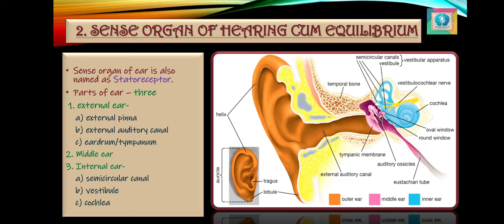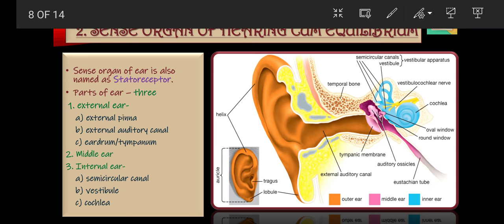The ear contains three main parts: first is the external ear, second is the middle ear, and the third is the internal ear. The first is the external ear — the outer part of the ear. Its function is to collect sound waves and convey them to the middle ear. It is divided into three main parts.